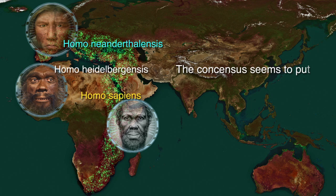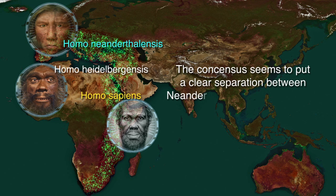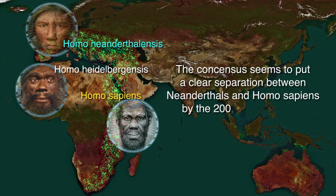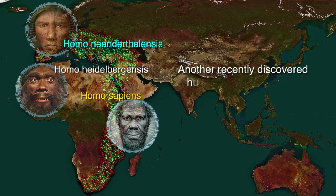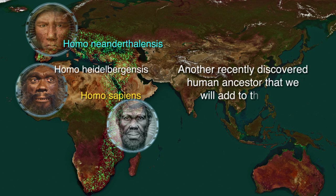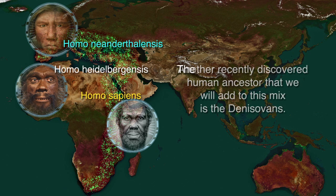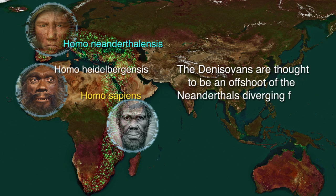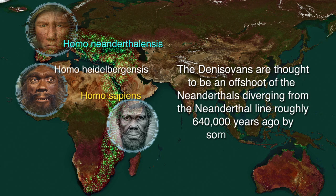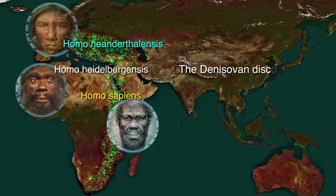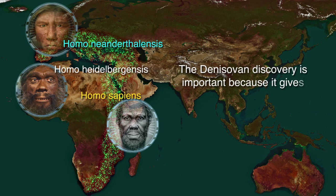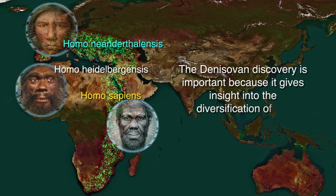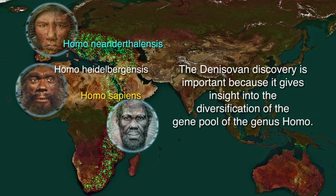The consensus seems to put a clear separation between Neanderthals and Homo sapiens by the 200,000 year mark. Another recently discovered human ancestor is the Denisovans, thought to be an offshoot of the Neanderthals diverging from the Neanderthal line roughly 640,000 years ago by some accounts. The Denisovan discovery is important because it gives insight into the diversification of the gene pool of the genus Homo.